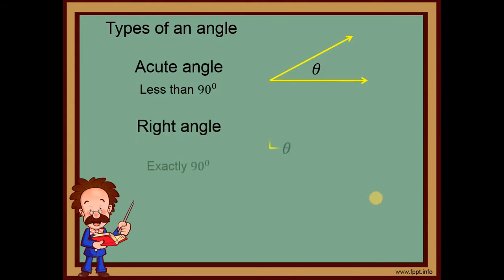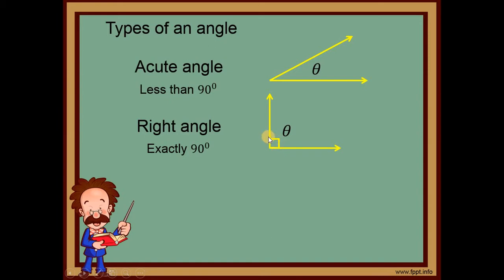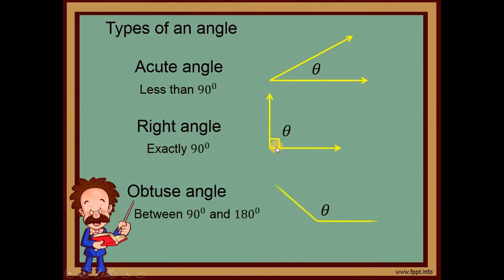Next, we have a right angle. When we say right angle, this is exactly 90 degrees. Usually, we can see a small box symbol — so even without the 90 degrees label, if we see that box, it is automatically 90 degrees. Next is the obtuse angle — those are angles that measure between 90 degrees and 180 degrees, so greater than 90 degrees.